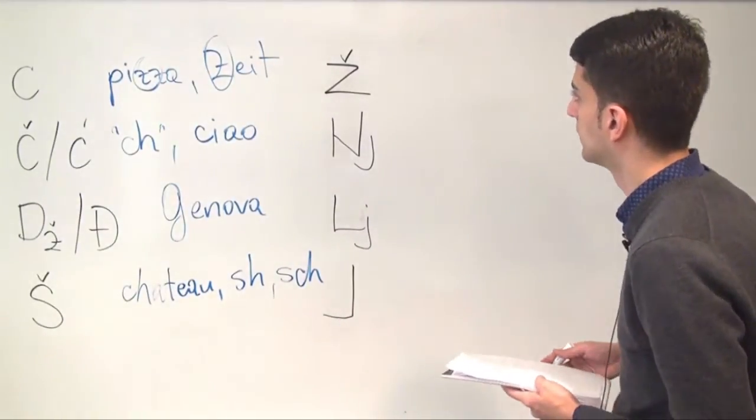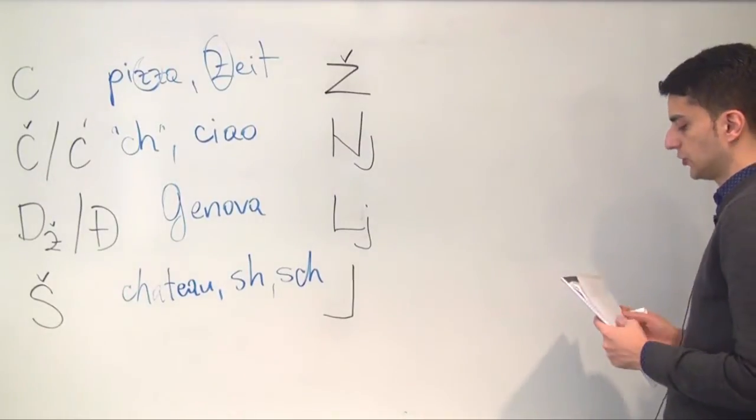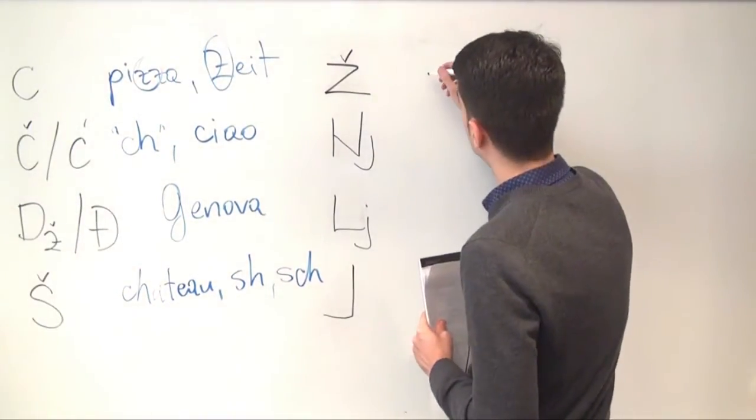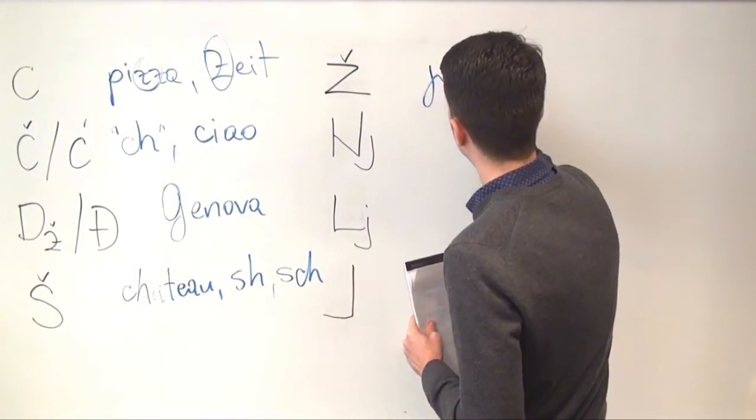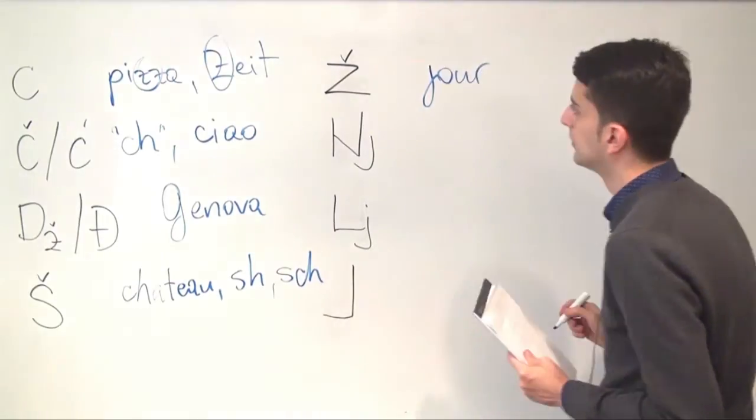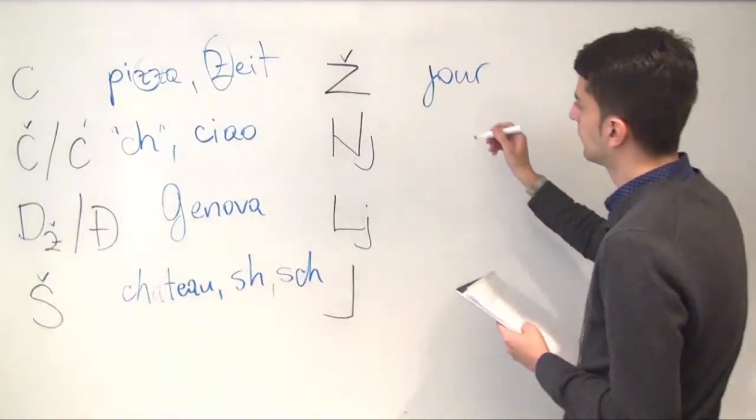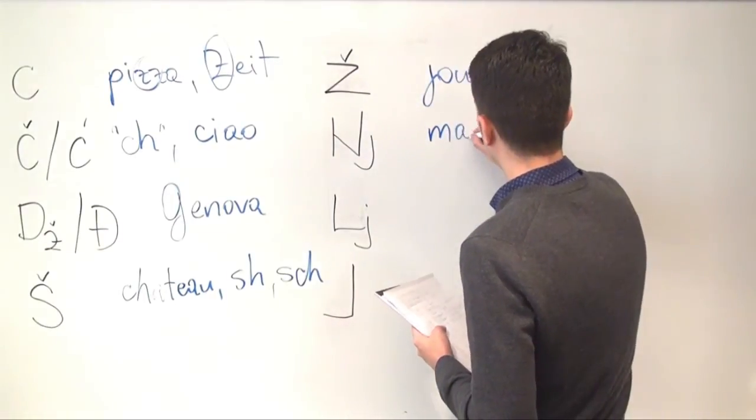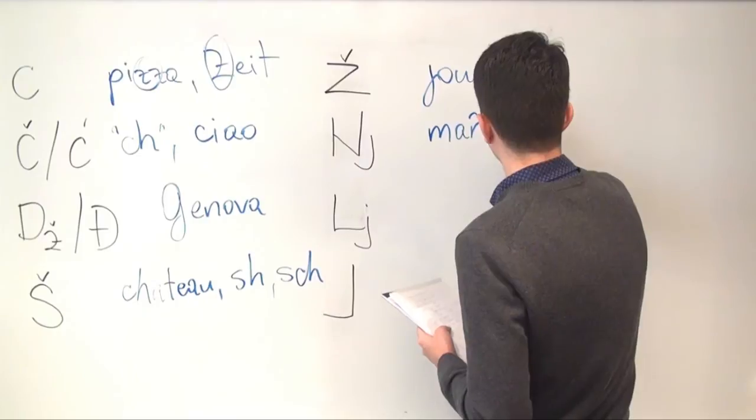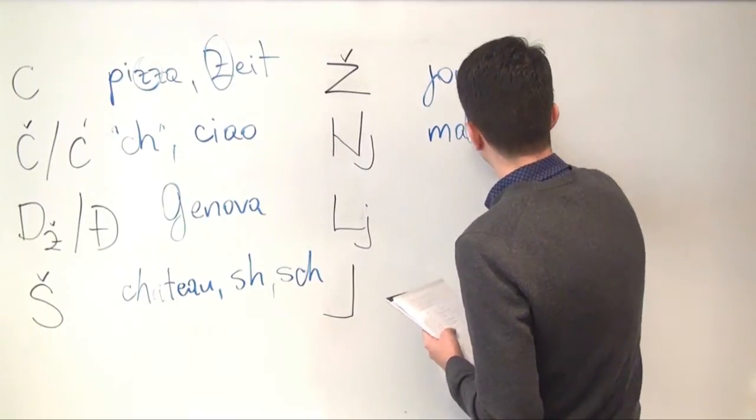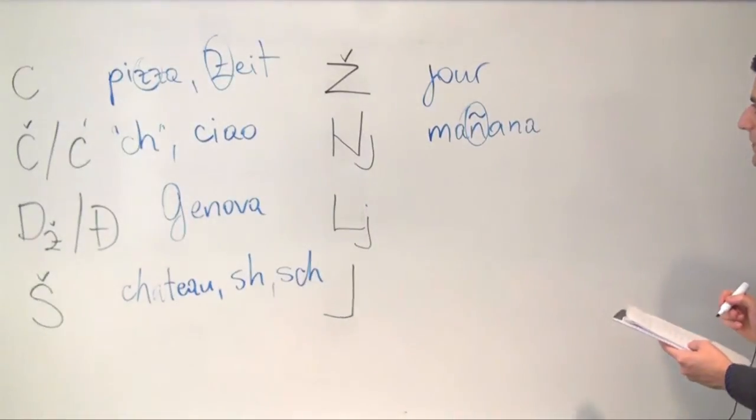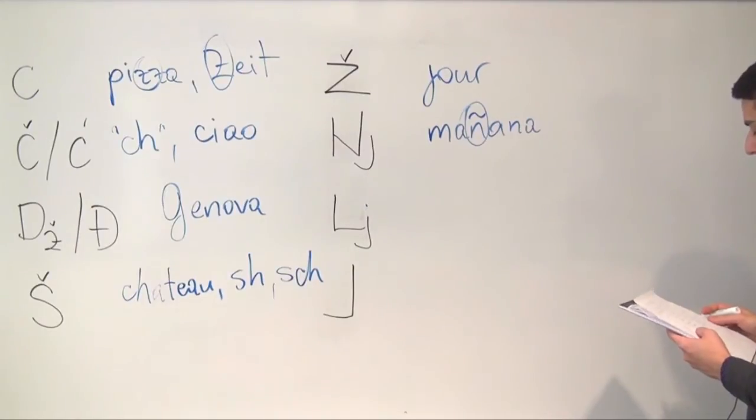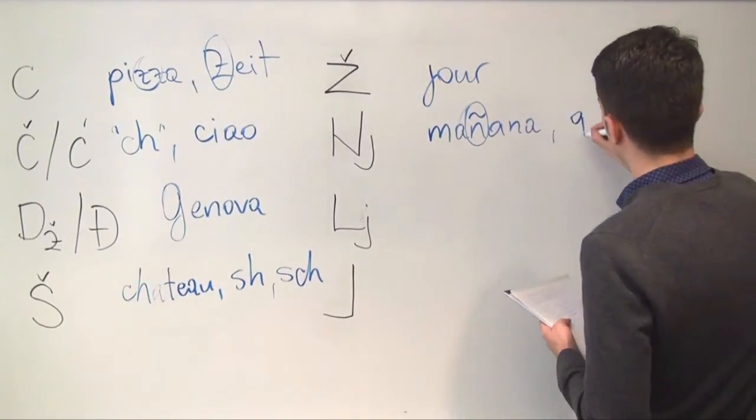Moving on to the next row here. We have J, which can be heard in the French word joule. Ñ which is very common in Spanish. For example, you can hear in the word mañana. And it's this particular letter, this particular sound. In Italian you can hear in the word gnocchi.